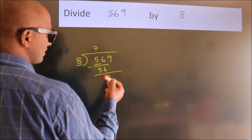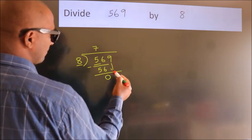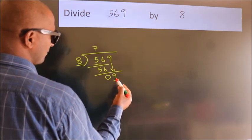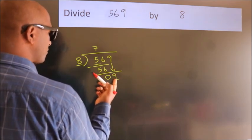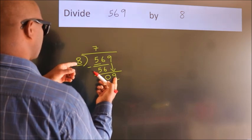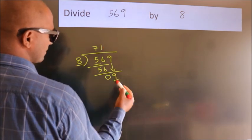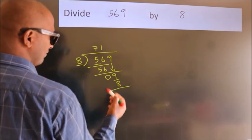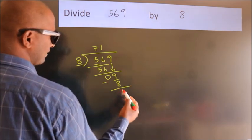After this, bring down the beside number. So 9 down, so 9. A number close to 9 in 8 table is 8 once 8. Now we subtract. We get 1.